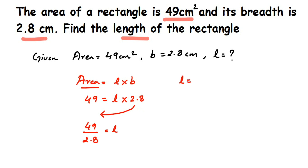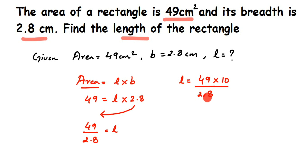L is equal to 49 divided by 2.8. There is a decimal in the denominator, so I need to remove the decimal point. I'll multiply 10 in the numerator because there is one digit after the decimal. This gives 49 multiplied by 10 divided by 28, which is 490 divided by 28. You can also directly divide 49 by 2.8 if preferred.